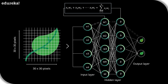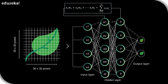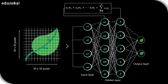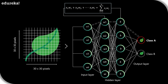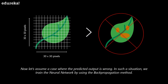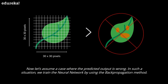In this manner, the data is propagated forward through the neural network until the perceptrons reach the output layer. At the output layer, a probability is derived which decides whether the data belongs to class A or class B. Now let's assume a case where the predicted output is wrong — in such a situation, we train the neural network by using the back propagation method.